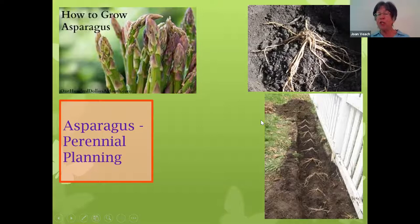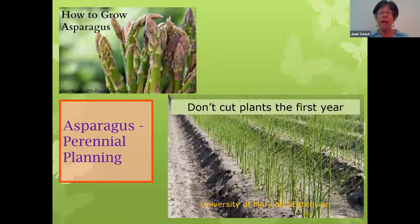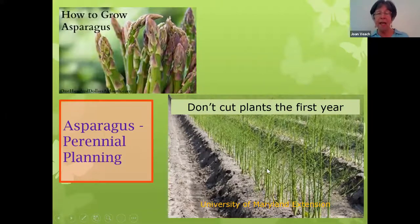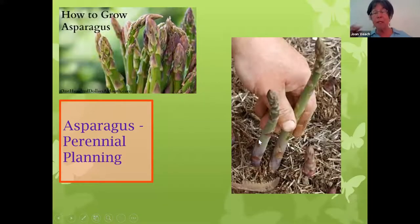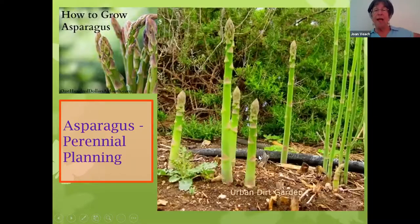That first year, so you're going to do that early in the spring, you're not going to cut your plants at all — you're not going to harvest any asparagus, because those roots need all the nutrition from these plants to get themselves established. The second year, you might be able to cut a couple of spears. By the third year, you should have a pretty good crop. You can start cutting them when they're six to eight inches tall. In this bed, they have several that are ready to go and a couple almost ready.